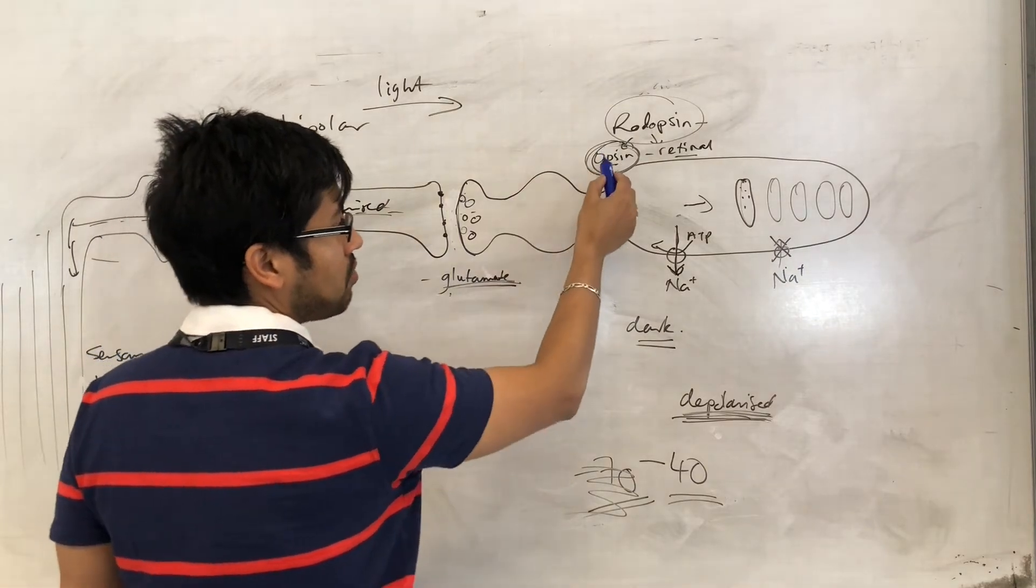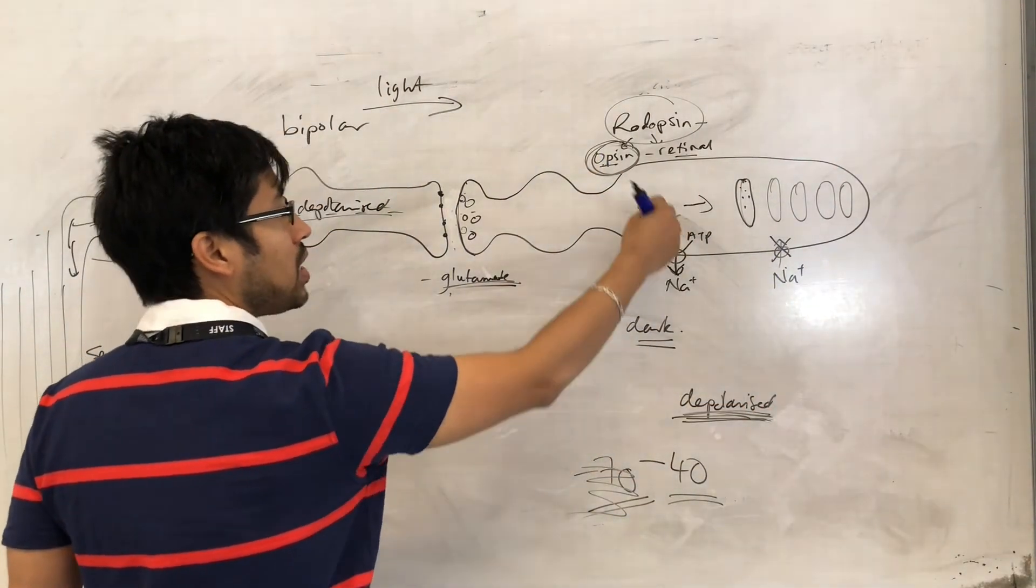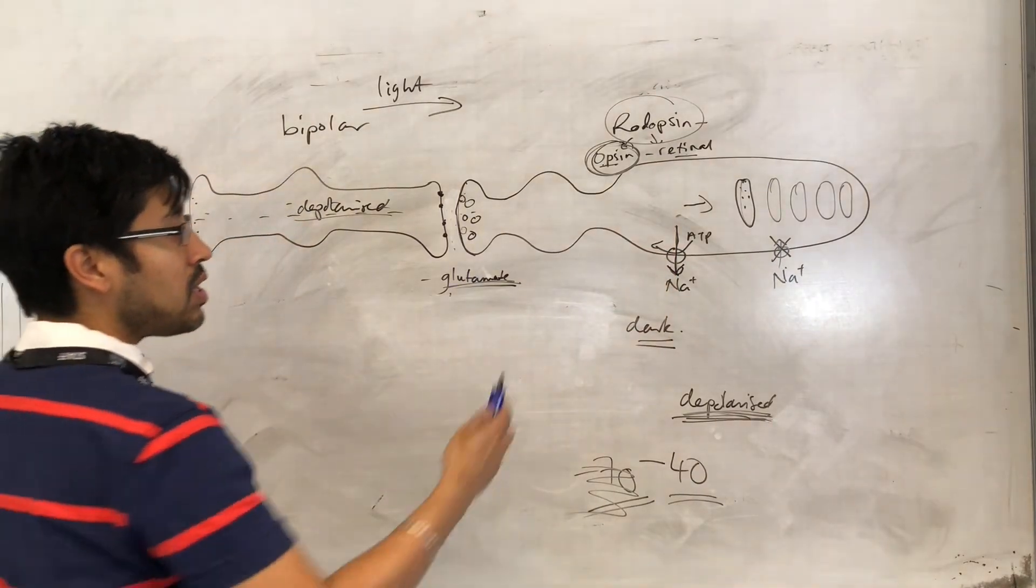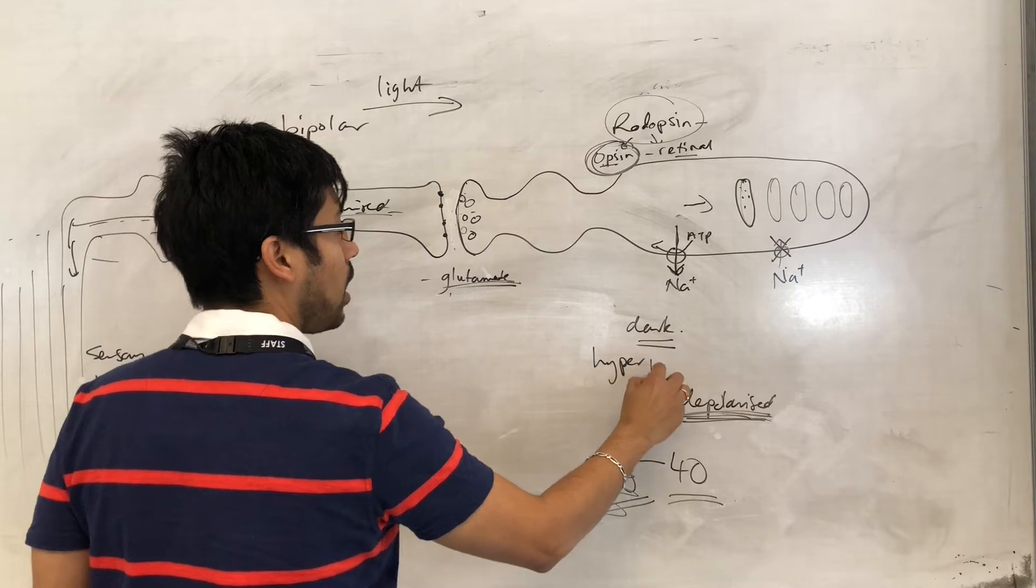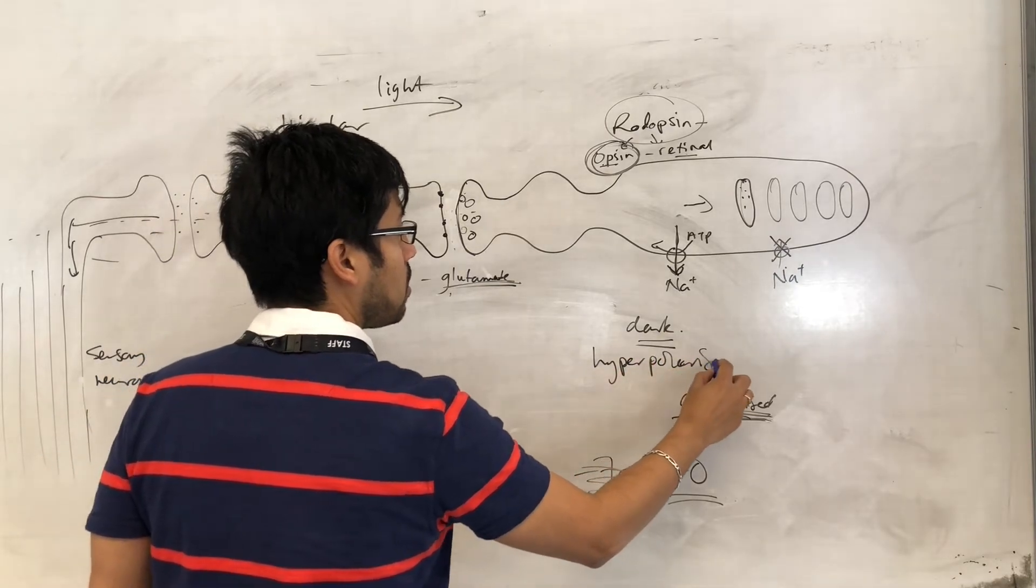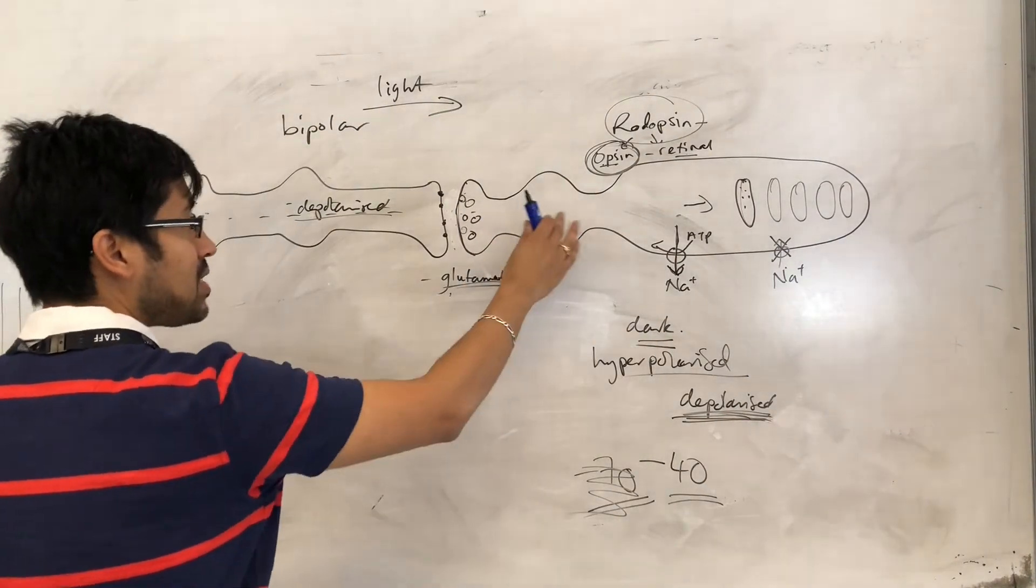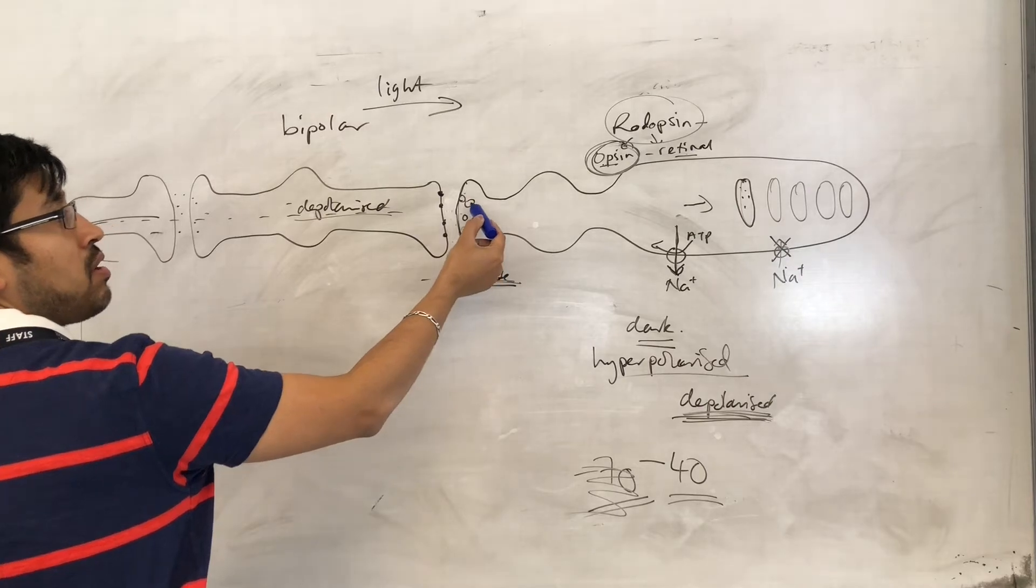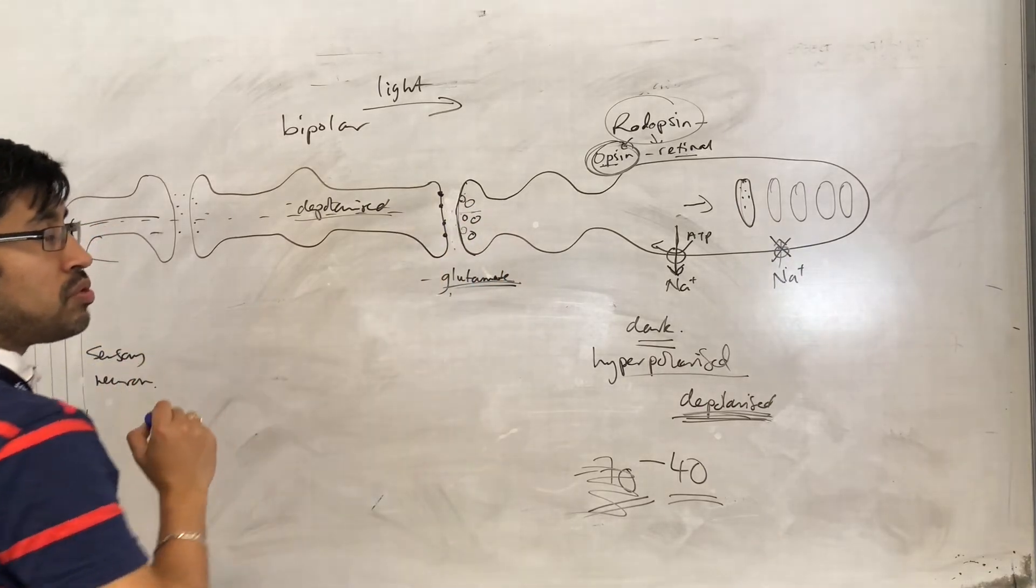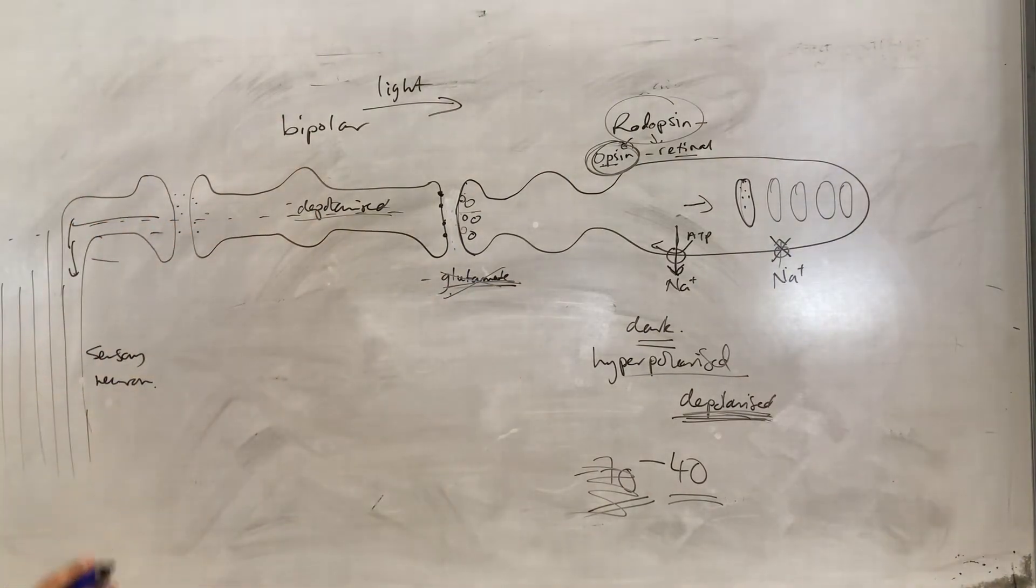However, in the light, so when there's light, and opsin is present, the channel is closed, sodium is not coming in, it is still being removed, this cell, the rod cell becomes hyperpolarized. And in the state that it's hyperpolarized, then there is nothing causing the synaptic vesicles to fuse with the membrane, and so the glutamate is not released.